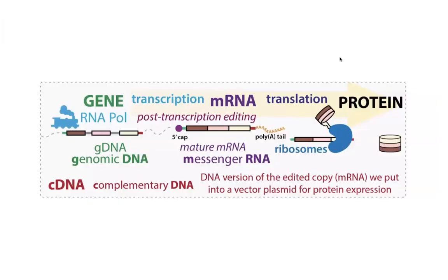Going back to our central dogma of molecular biology, the instructions for making a protein are written as a DNA gene that gets transcribed to make a messenger RNA copy, which gets translated to make a protein. Because of the universal nature of the genetic code, we can put those instructions into any type of cells and get them to make the right protein. When you transcribe a gene, you transcribe extra information not needed by ribosomes — regulatory information, introns, and so on — so you get editing to produce a mature messenger RNA. What we put into cells is a DNA version of that messenger RNA, called a cDNA or complementary DNA. We often just call it a gene, but technically it's a cDNA.